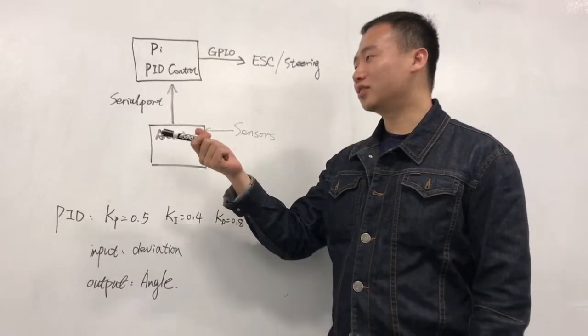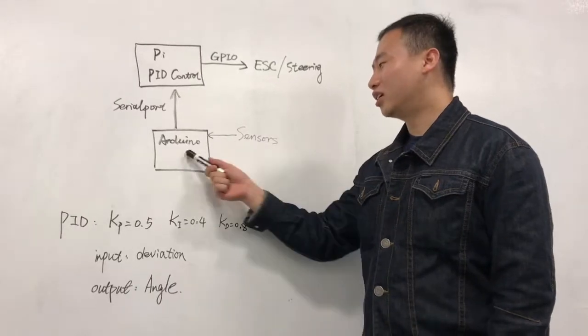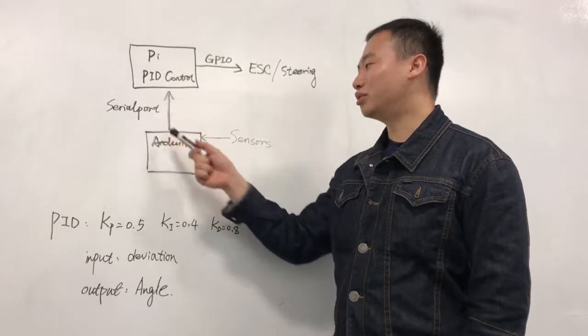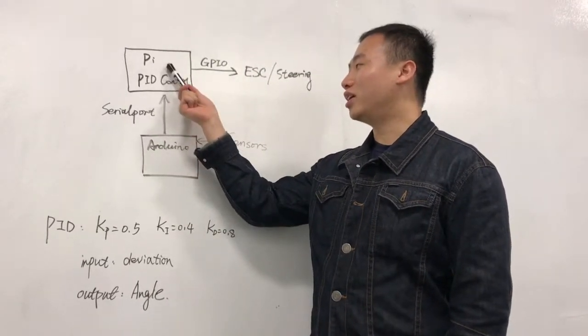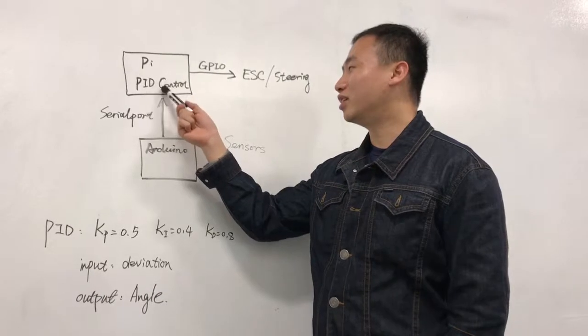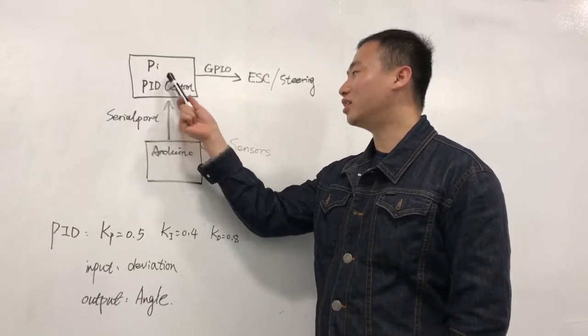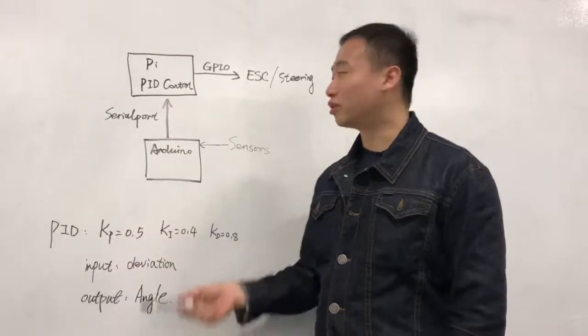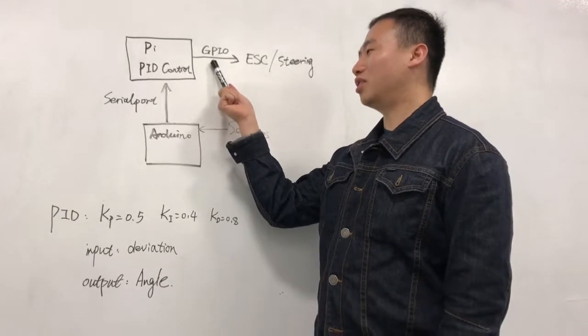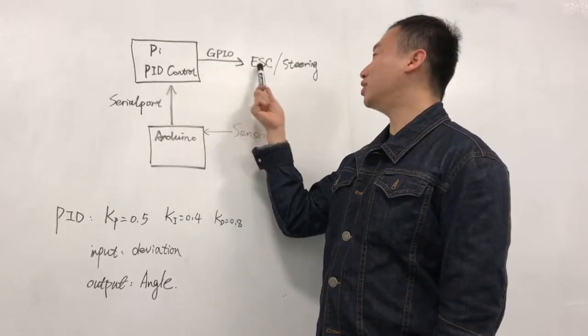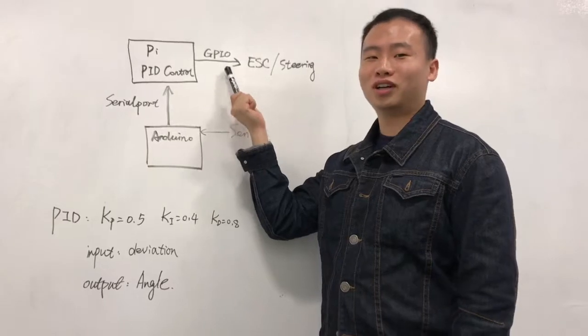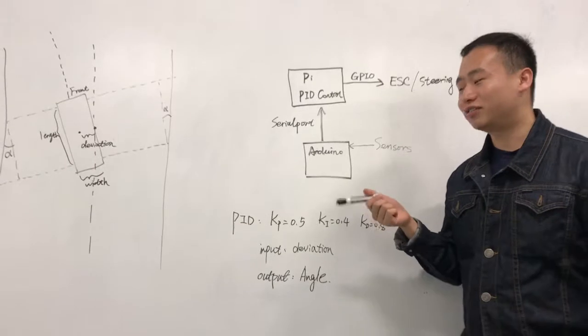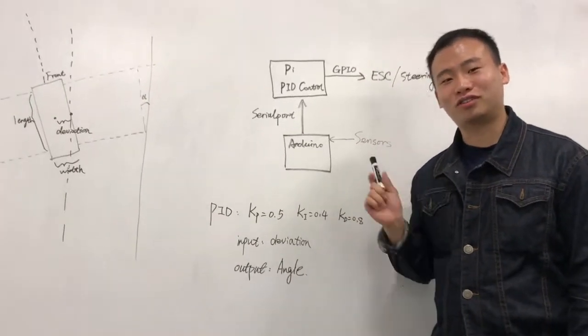For the whole block diagram, we're using the Arduino to collect data from the sensors and we're using the serial port to send the data from Arduino to the Pi. The Pi acts like a microprocessor that uses the PID control we introduced before to calculate the angles and communicate with ESC steering using the GPIO port. So this is how we get things started for Challenge 5. And next I'm going to show you our demo for this challenge.